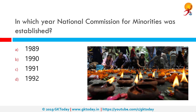In which year was the National Commission for Minorities established? The correct answer is 1992. The union government set up the National Commission for Minorities under the National Commission for Minorities Act, 1992. Six religious communities — Muslims, Christians, Sikhs, Buddhists, and Jains — have been notified in the Gazette of India as minority communities by the union government. The original notification of 1993 was for five religious communities: Sikhs, Parsis, Christians, and Muslims.